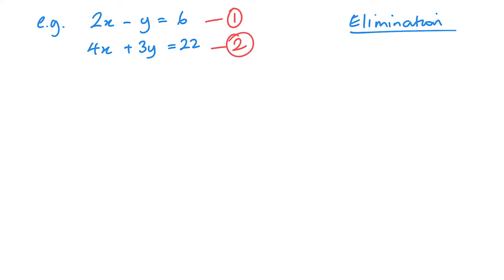Now to do the elimination method, I need to make either the x's or the y's equal in size. I can either make the 2x and the 4x equivalent in size, or the y's equivalent in size. I'm not worried about signs, but just equivalent in the magnitude. What I'm going to do is multiply this first equation by 2. So I'm going to get 4x minus 2y equals 12, and this is now my new equation 3.